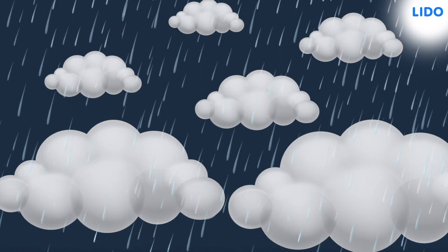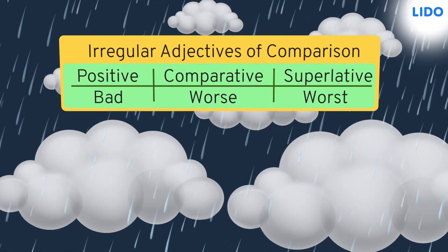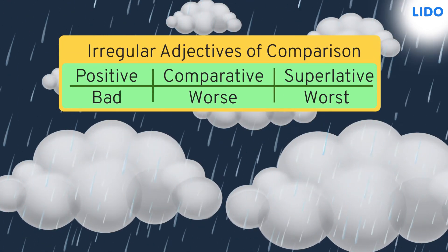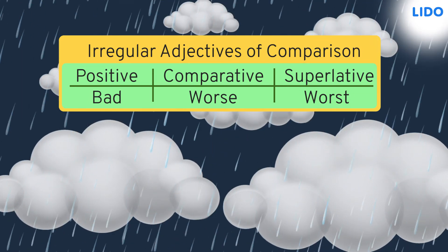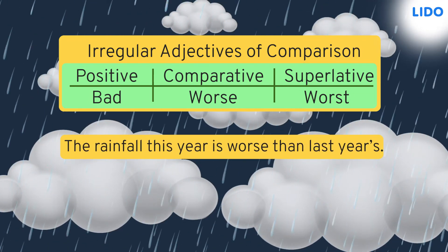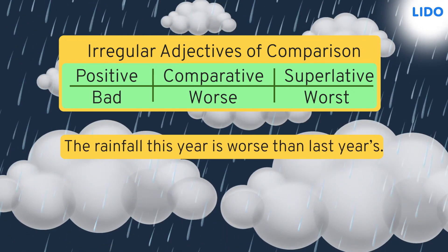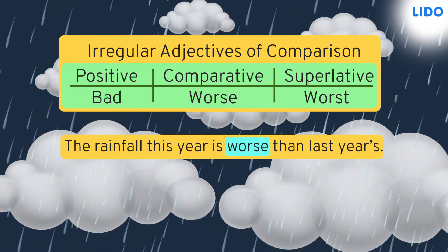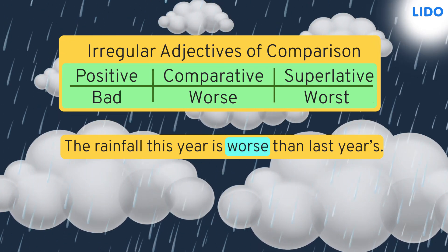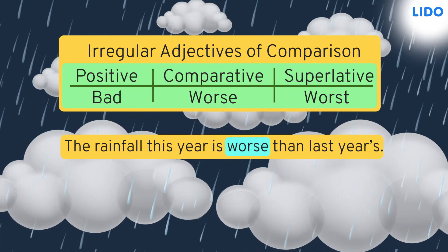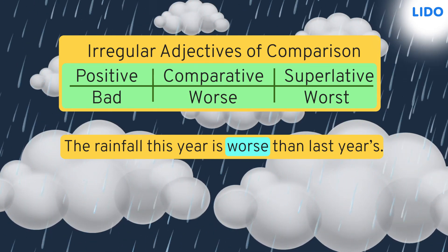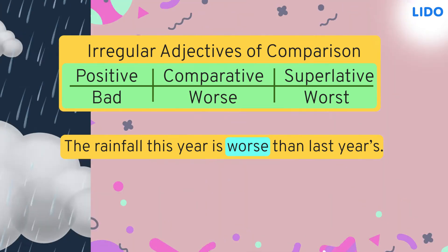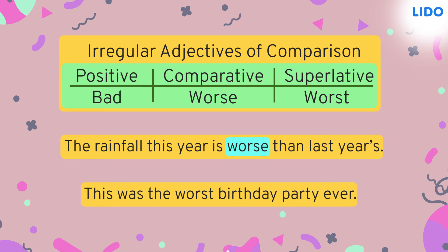We do the same for the word 'bad'. When you want to compare two bad things, we use the word 'worse'. The rainfall this year is worse than last year's. When you want to talk about the highest degree of bad in any noun, we use 'worst'. This was the worst birthday party ever.